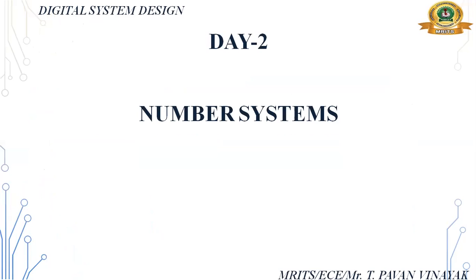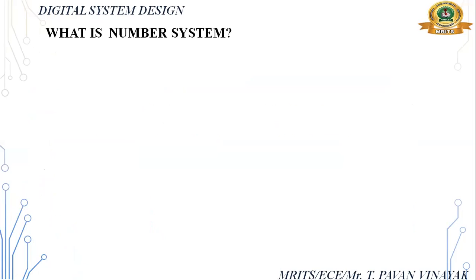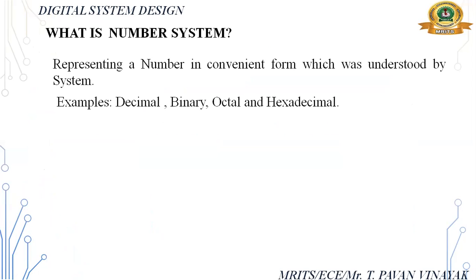Good morning everyone. Today we start the new topic: numbering system. So what is a number system? Number system means representing a number in a convenient form to be understood by the system. Examples of standard number systems we use: decimal, binary, octal, and hexadecimal.